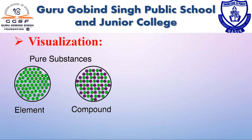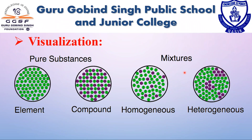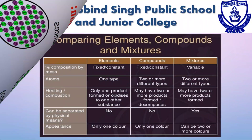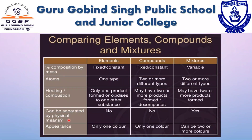The above picture describes the visualization of differences between elements, compounds, and mixtures. Pure substances are classified into two types: element and compound, while mixtures are classified into two types: homogeneous mixtures and heterogeneous mixtures. This chart describes the comparison between elements, compounds, and mixtures.